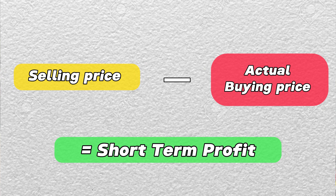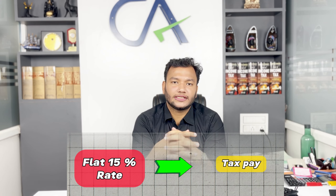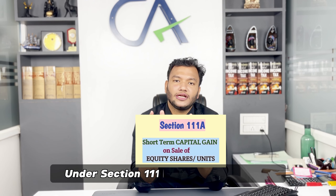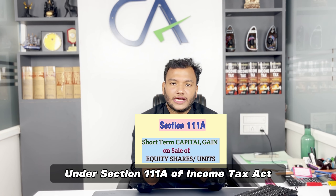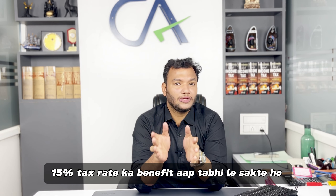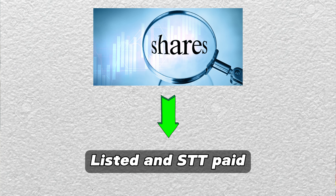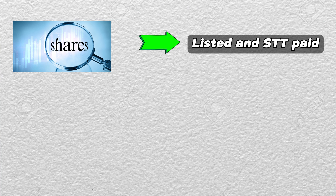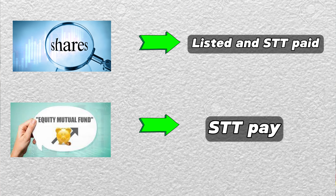On this profit, you have to pay tax at 15% under Section 111A of the Income Tax Act. This 15% tax rate benefit you can always take when your shares are listed or STT paid, or equity mutual funds are also STT paid.